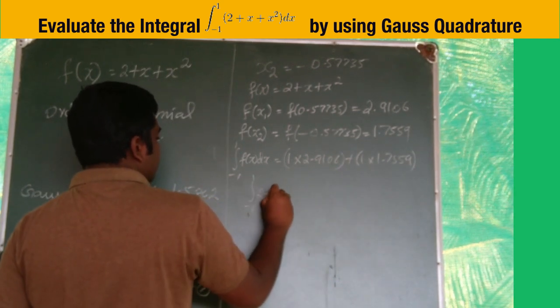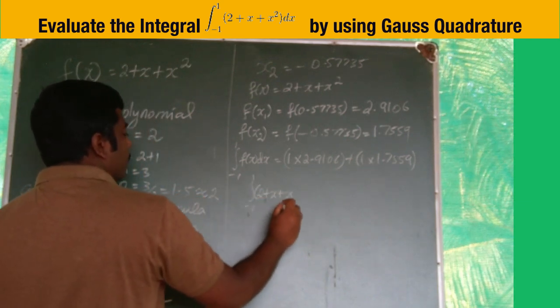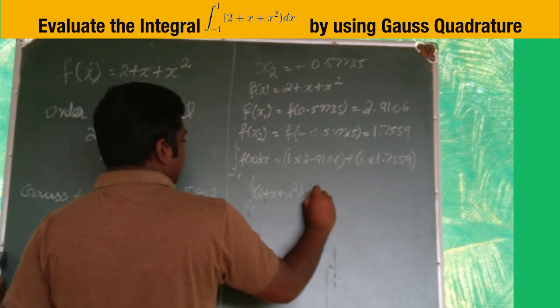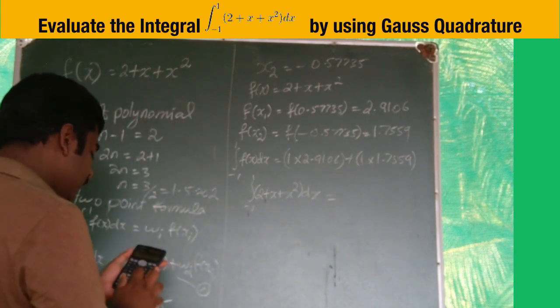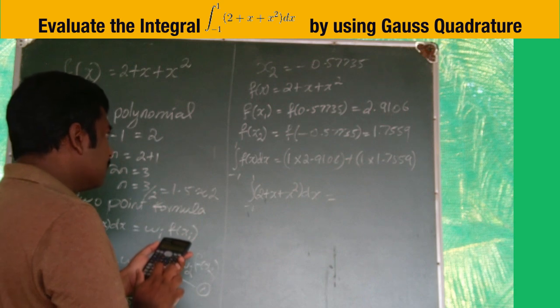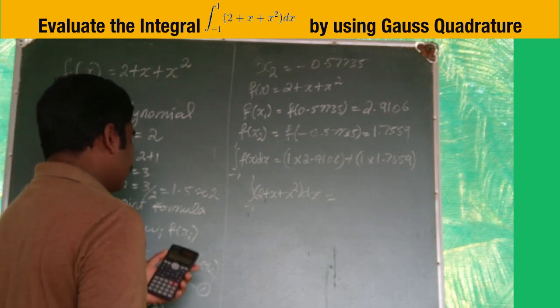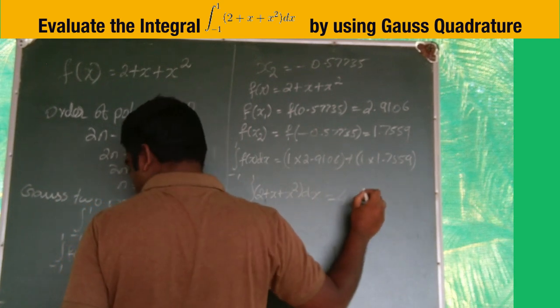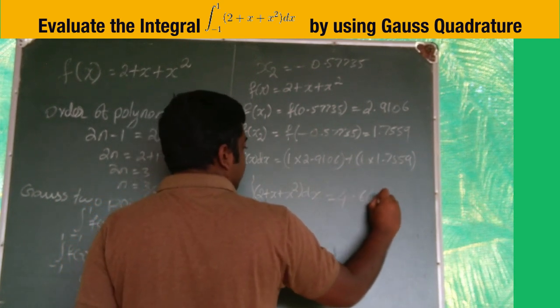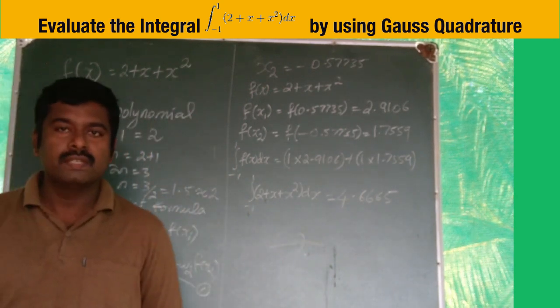This equals 1 times 2.9106 plus 1 times 1.7559, which equals 4.6665. This is the required solution, thank you.